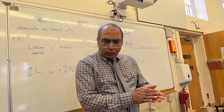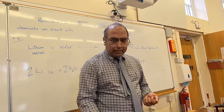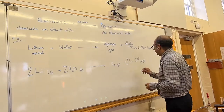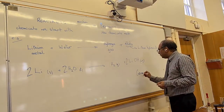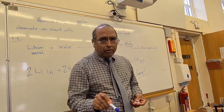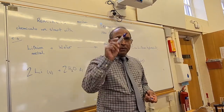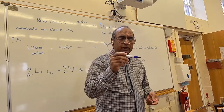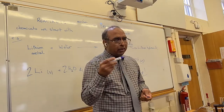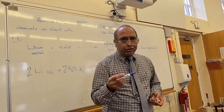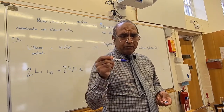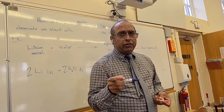Lithium is in group one of the periodic table — the first column, at the very top. Underneath it is sodium, and underneath that is potassium. The reason we do lithium, sodium, and potassium in sequence is to show you the trend, which is one of increasing reactivity.